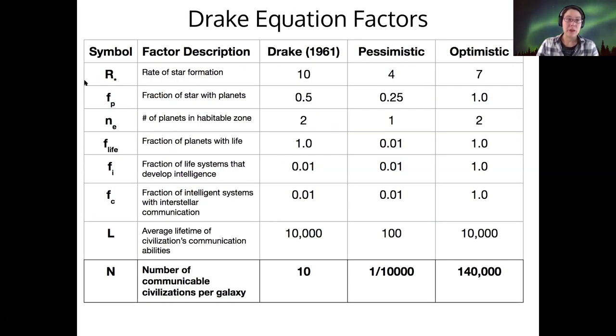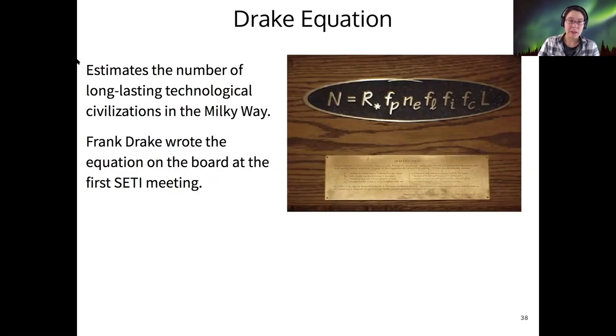Some factors in the Drake equation are these. I'm going to go through them one by one. So going back to the previous slide, though, notice that the equation says N. That's the number of long-lasting technological civilizations, and it's equal to the product of all those other factors.